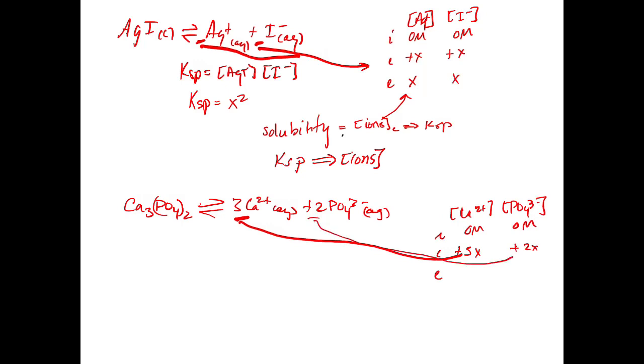So we know that for every one of the calcium three-phosphates, we're going to get three of the calcium two-plus, and we're going to get only two of the PO4 three-minus.